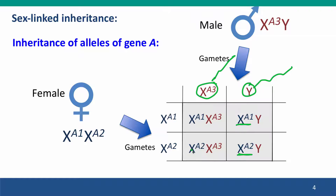The daughters that receive the father's X-bearing sperm all have an X chromosome from their father, plus one of their mother's two X chromosomes. This is quite different from alleles of genes on autosomes, where we have no phenotypic cue as to which autosome the person inherited from which parent. But for the X and Y chromosomes, we have the very obvious cue of gender.